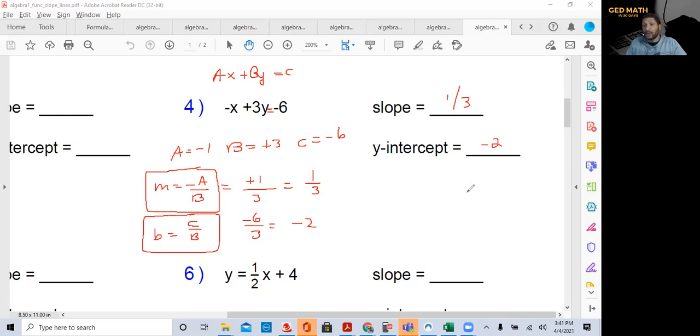If you had to change this to slope-intercept form, it'd be y equals, and we know slope-intercept form is y equals mx plus b. So instead of m, we're going to put one-third. So y equals one-third x. Instead of b, we're going to put minus two. That easy. That's how you find the slope and y-intercept from standard form.